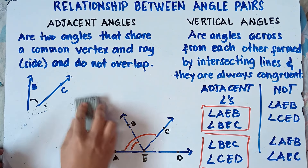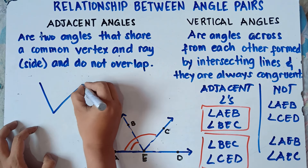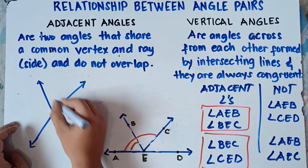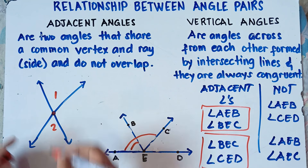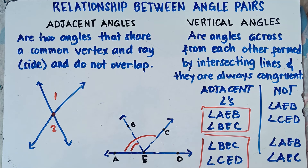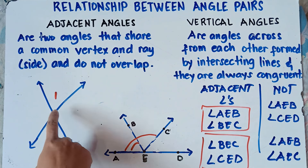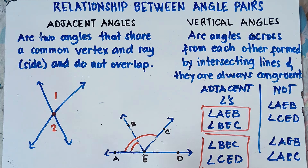Let me give you one last example for adjacent angles. What if we have angle 1 and angle 2 in this illustration — are these adjacent angles? Nope, it's not. They share a common vertex, that's correct, but they don't share a common side. Therefore, this is not an adjacent angle. Angle 1 and angle 2 are not adjacent angles. I hope it's clear with regards to adjacent angles. If you have questions, feel free to leave a comment in the comment section down below.